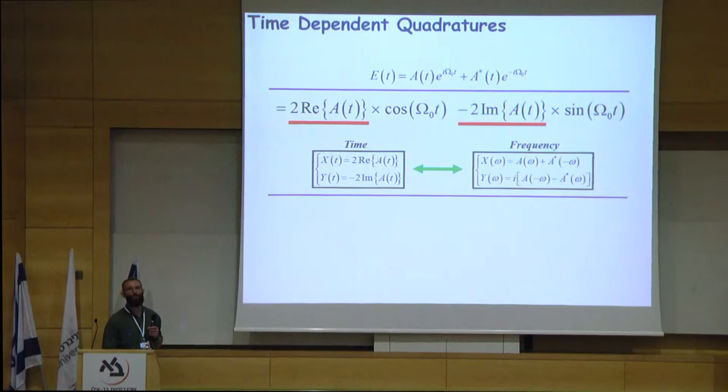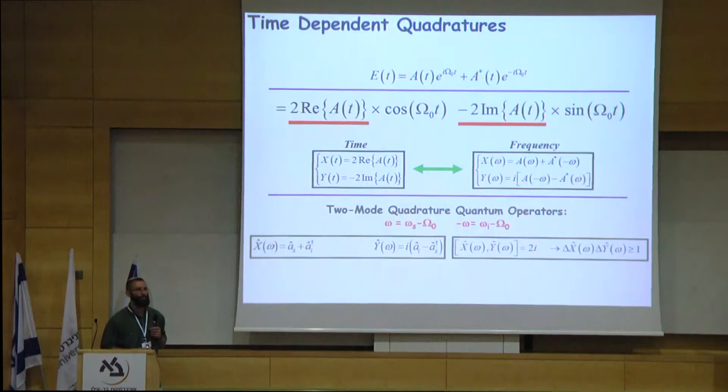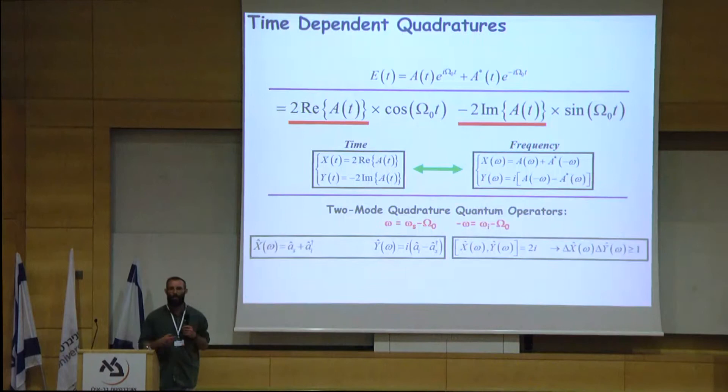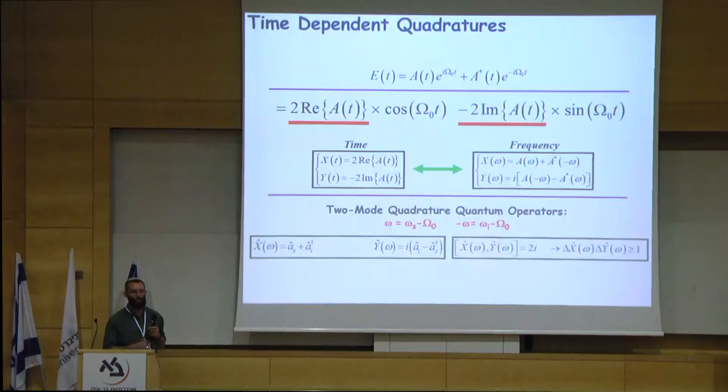Switching to the signal and idler indexes, I can write down the frequency component quadrature operators, which are A_signal + A_idler† and A_signal − A_idler†. You can show that they do not commute and in the end obey a quantum uncertainty principle, just like position and momentum.